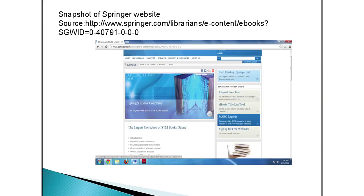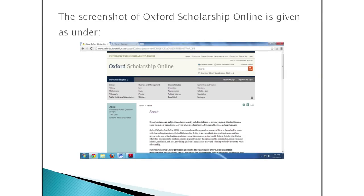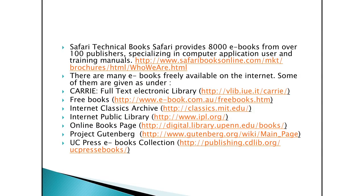Oxford University Press provides access to 8,000 academic monographs from 20 subject areas including humanities, social science, medicine and law. The platform is popularly known as Oxford Scholarship Online (www.oxfordscholarship.com). The collection is regularly updated with new titles three times a year. Safari Technical Books provides 8,000 e-books from over 100 publishers specializing in computer applications, user and training manuals (www.safaribooksonline.com).